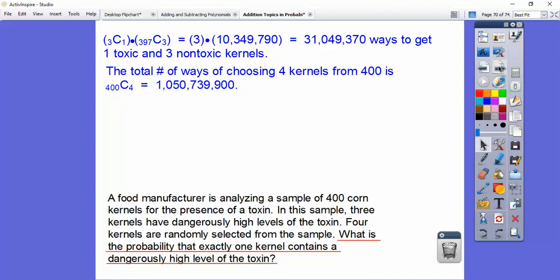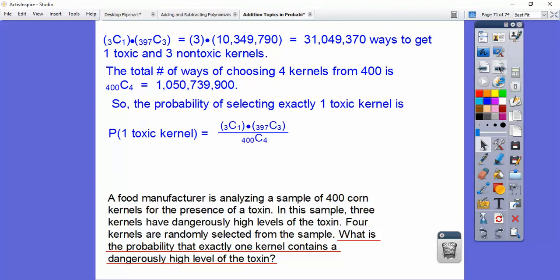The total number of ways of choosing four kernels is 400C4. So that's our bottom number. So probability is our favorable divided by total, and we get about, it looks like about, it looks like this is going to, they want us to represent it as 30 thousandths. So tenths, hundredths, thousandths, 30 thousandths right there.